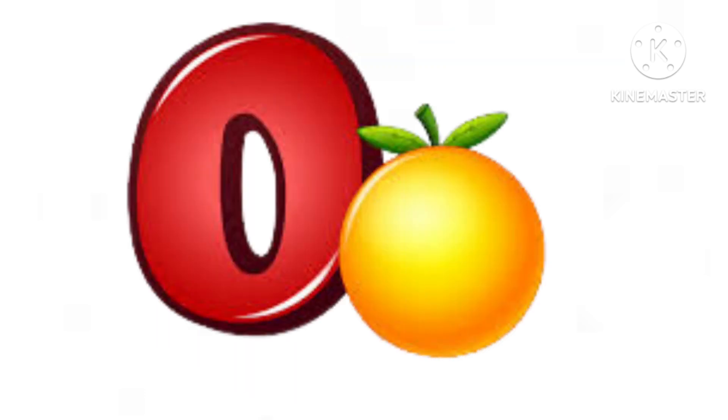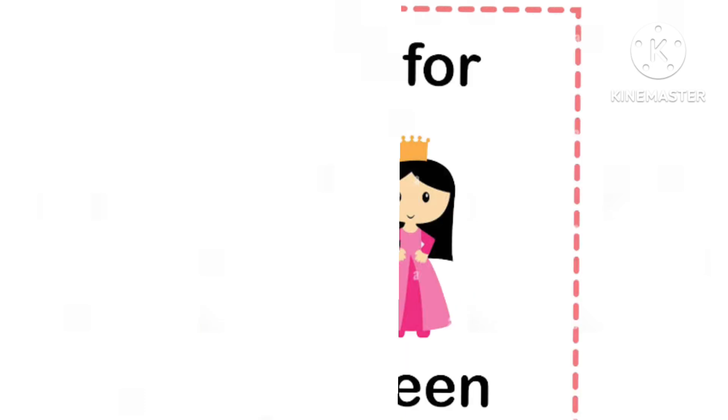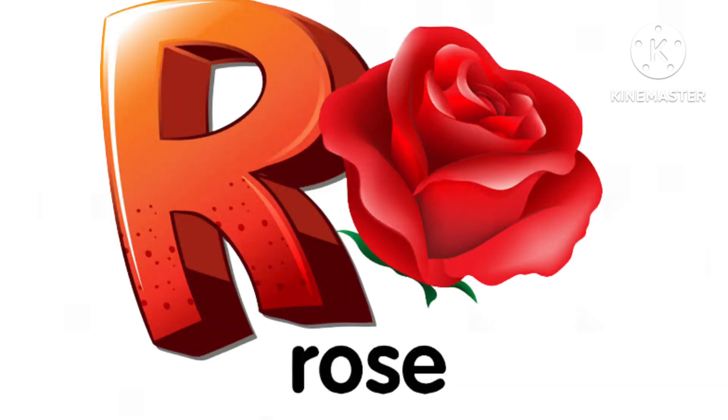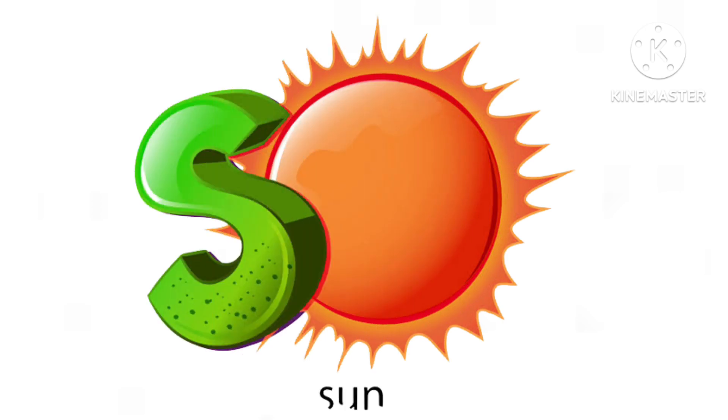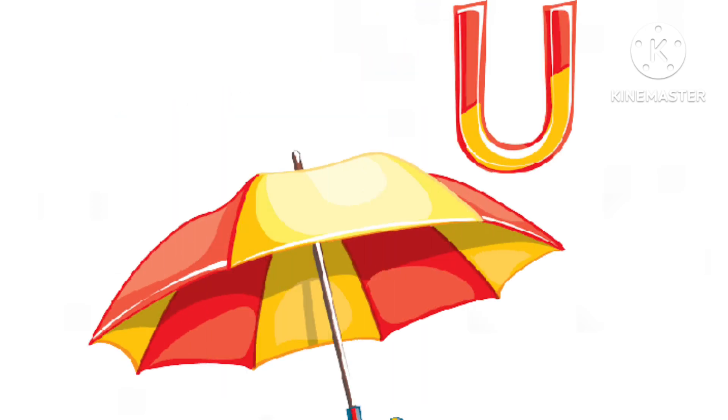O for orange, P for parrot, Q for queen, R for rose, S for sun, T for tiger, U for umbrella.